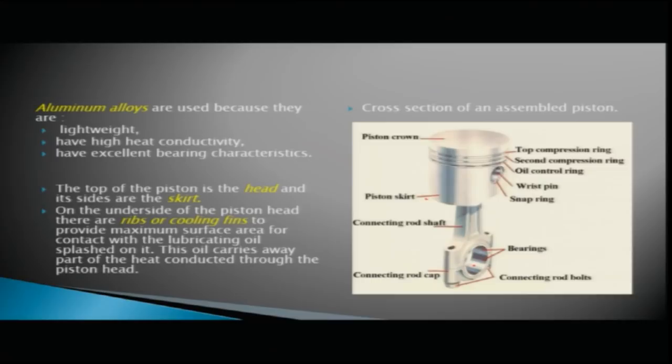The top of the piston is the head and its sides are the skirt. On the underside of the piston head there are ribs or cooling fins to provide maximum surface area for contact with the lubricating oil splashed on it. This oil carries away part of the heat conducted through the piston head.